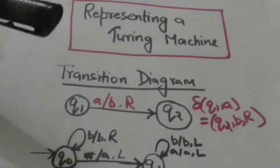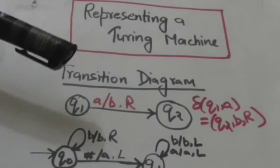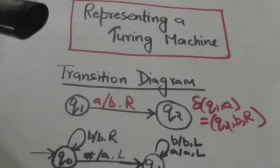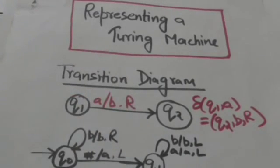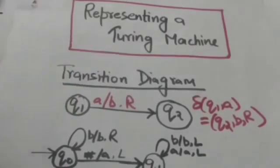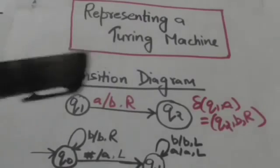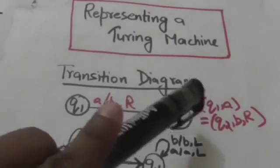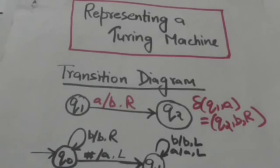Nodes of the transition diagram represent the states of the Turing machine, and directed labelled edges represent transitions. For example, if there is a transition where the Turing machine is in state q1 and reads tape symbol A, then it jumps to state q2, replaces tape symbol A with tape symbol B, and moves its head one position right.